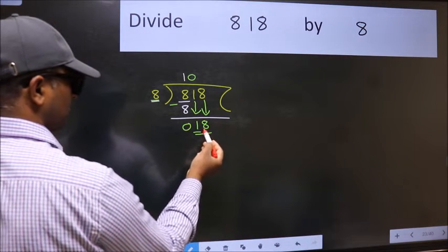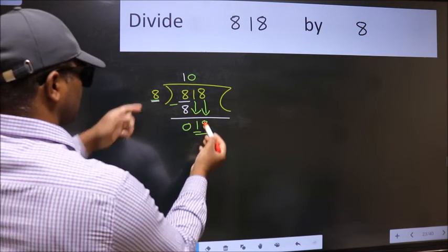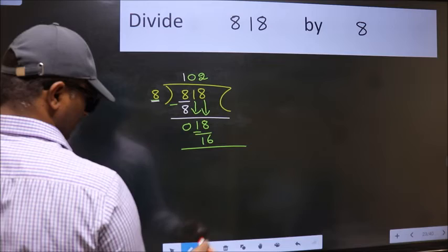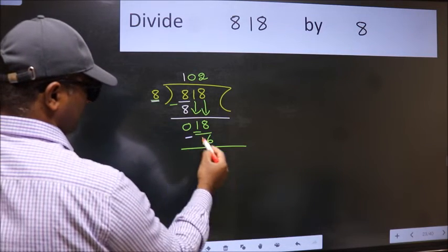So, 18. A number close to 18 in 8 table is 8 to 16. Now, we subtract. We get 2.